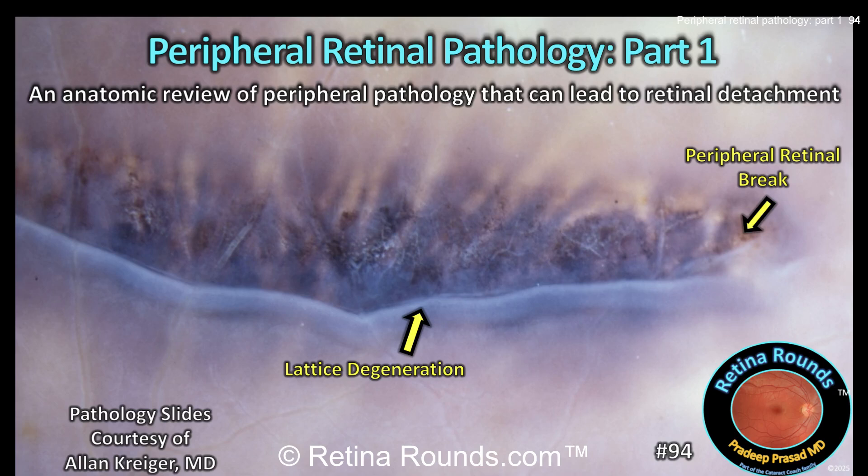Retina Rounds, episode number 94: Peripheral Retinal Pathology, Part 1. Today we're going to review the anatomic features of peripheral retinal pathology, and in particular those lesions that can predispose to a retinal tear or detachment. This is information every ophthalmologist should be familiar with, since identification and, in some cases, prophylactic treatment of these lesions can help prevent your patients from developing retinal detachments.